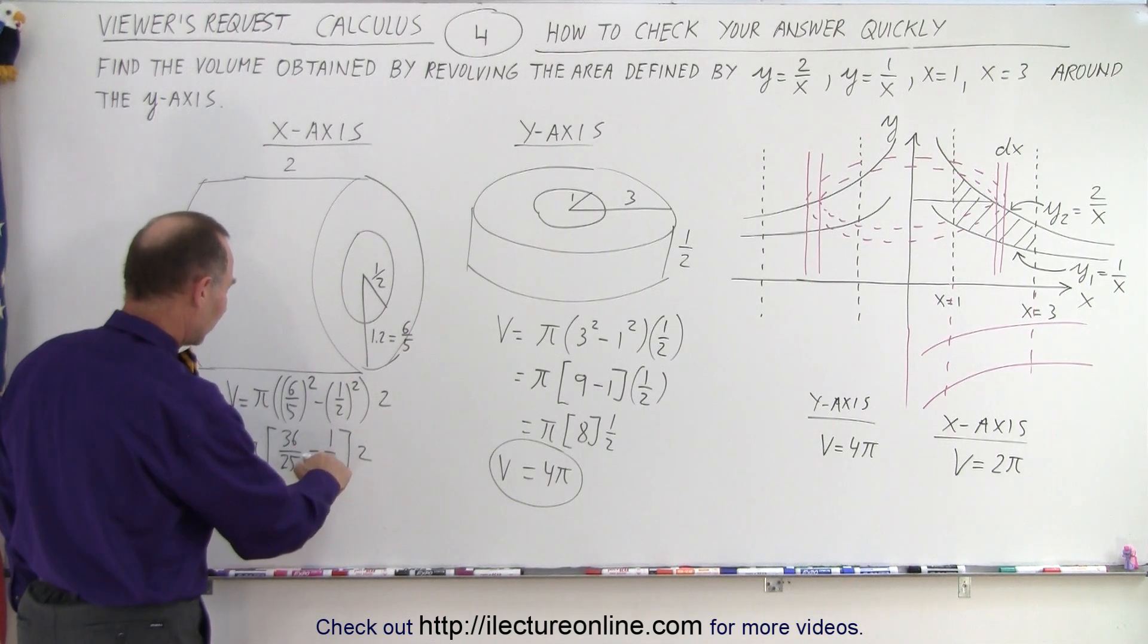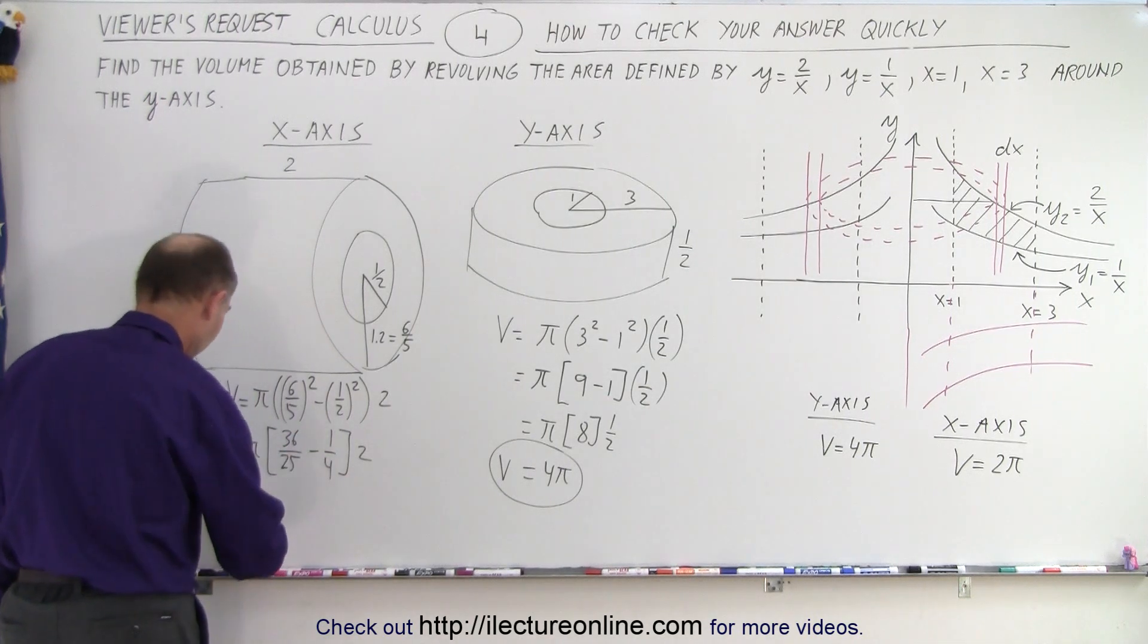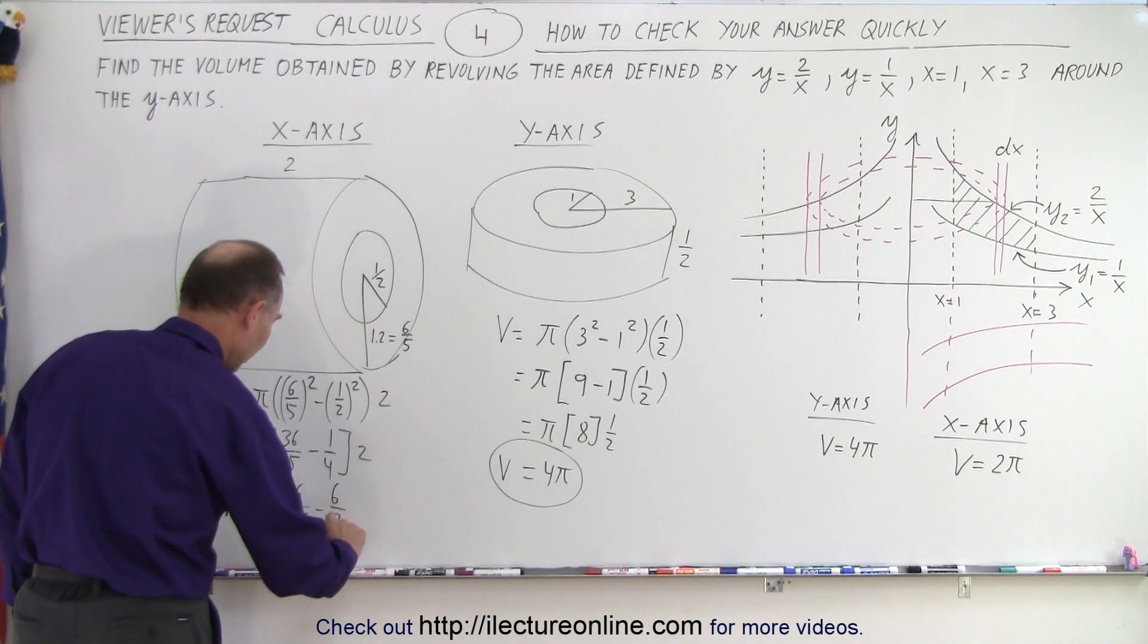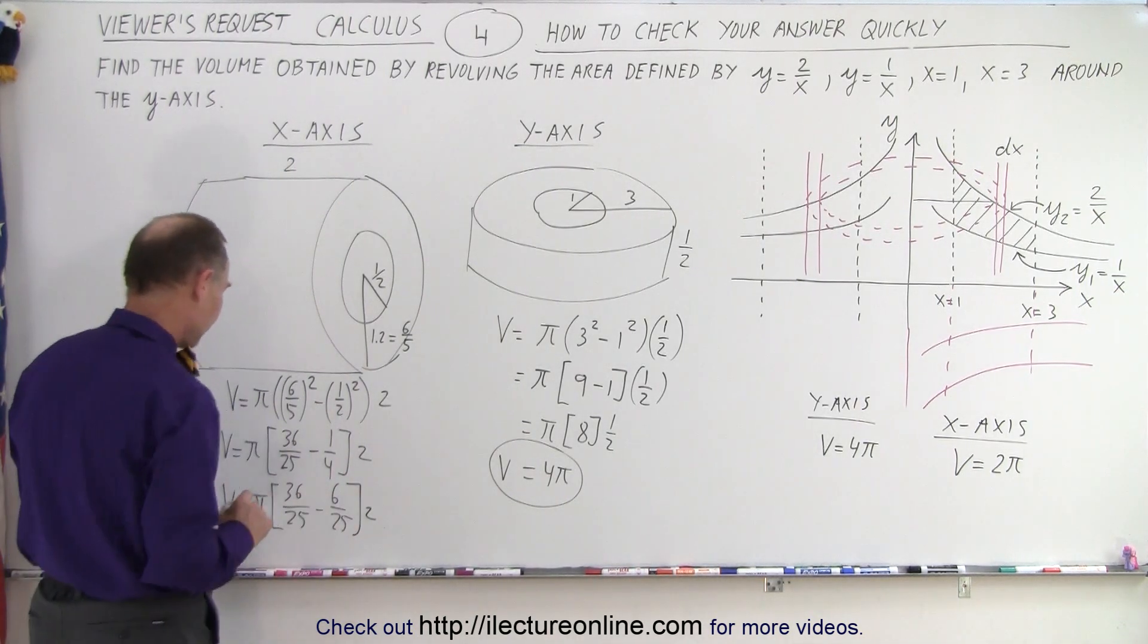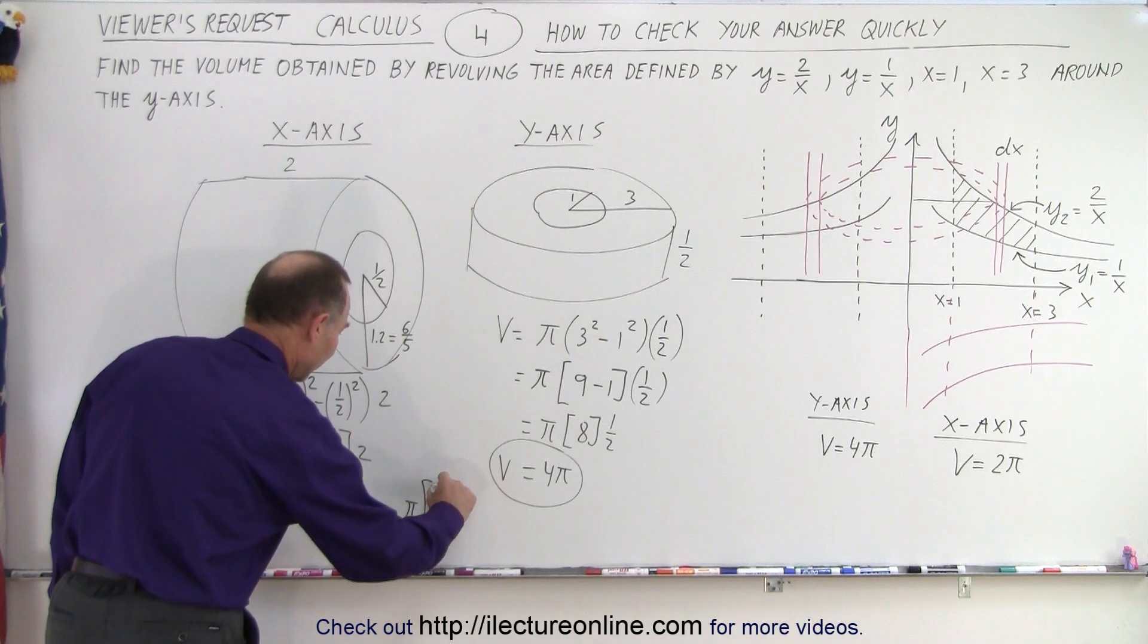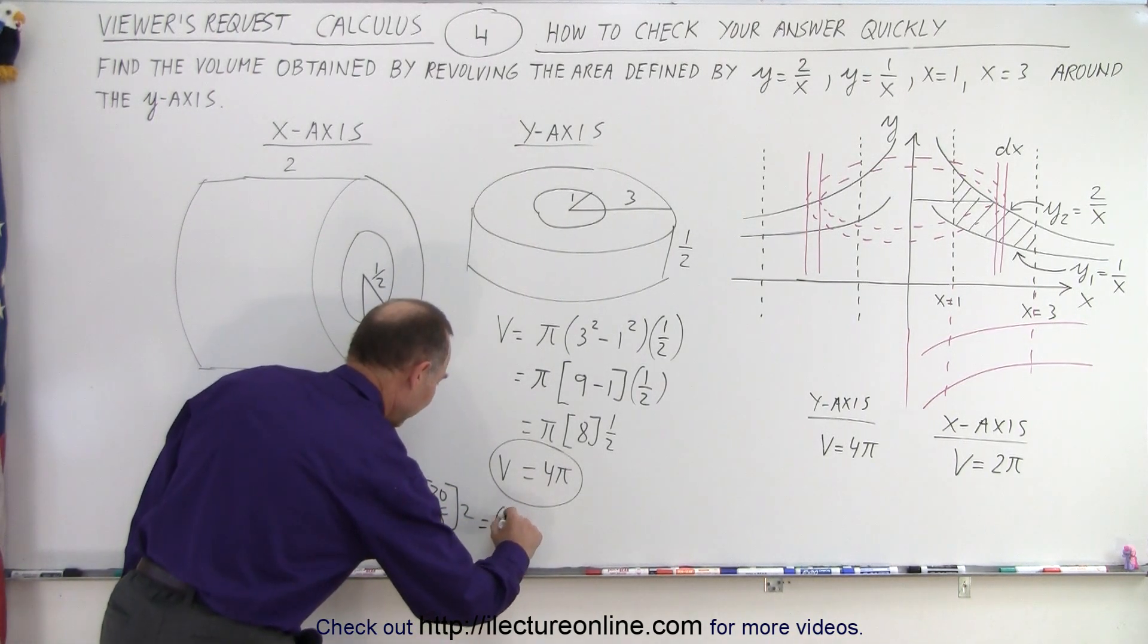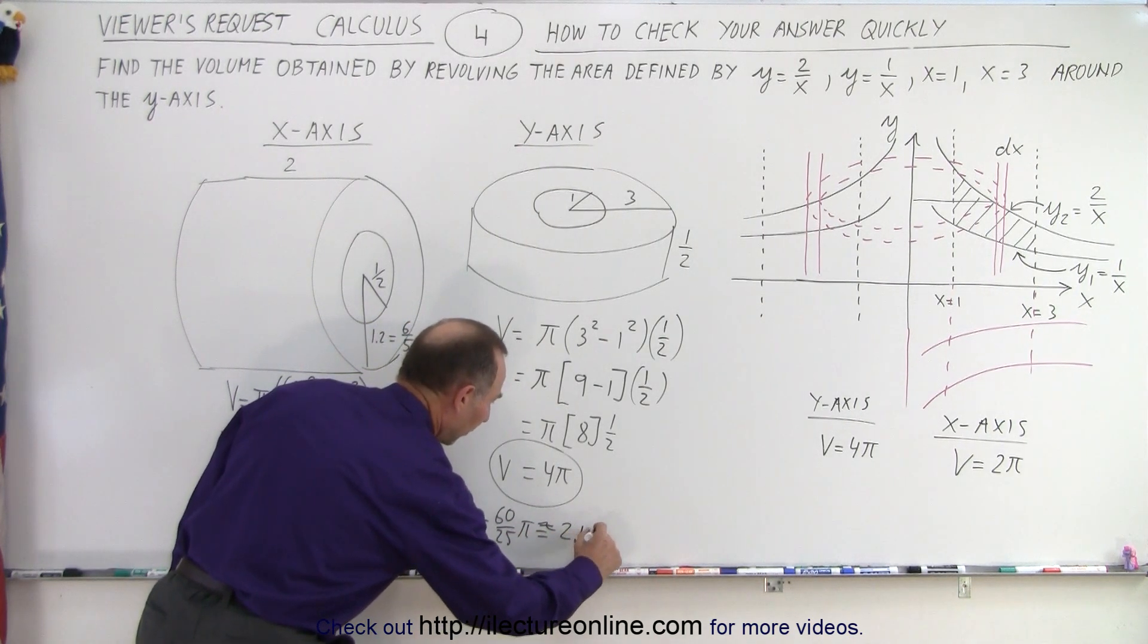So notice that this can be written as 6/24, which is approximately equal to 6/25. Again, we want to make it easy on ourselves. So volume is equal to π times 36/25 minus 6/25. I know it's 6/24, but we're just looking for the approximate value, times 2. So 36 minus 6 is 30, so we end up with π times 30/25 times 2. Well, that would be equal to 60/25 times π, which is approximately equal to about 2.4π.